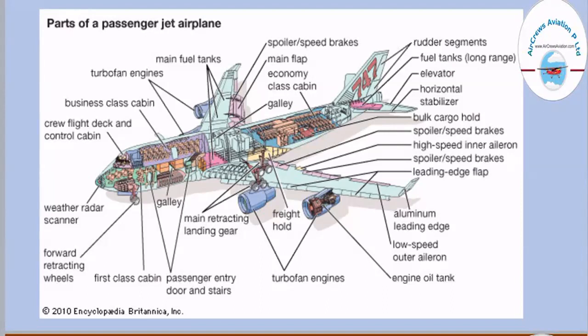Next to that we have the elevators, which are situated on the horizontal stabilizer. Then we have the bulk cargo hold, which is basically where all the bags of passengers traveling on the aircraft are placed. Moving to the left wing of the aircraft, here we have spoilers that are speed brakes. Next to that we have high-speed inner ailerons, which are the control surfaces. On each wing we have two spoilers situated.